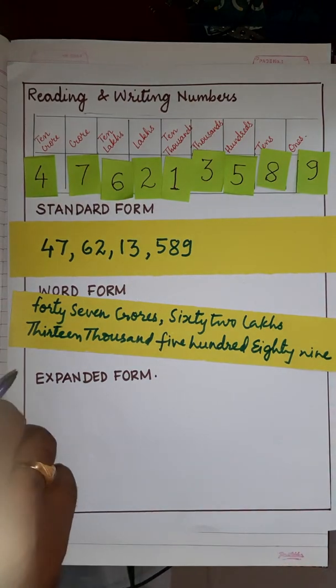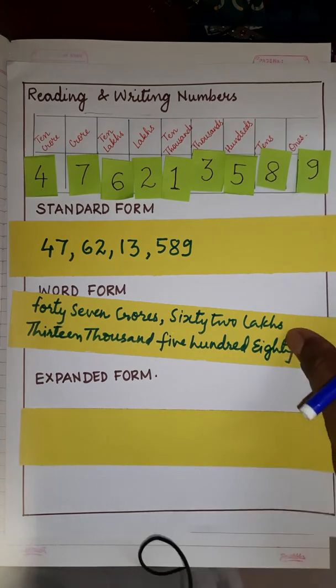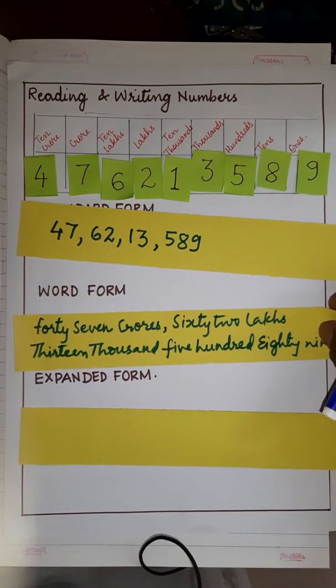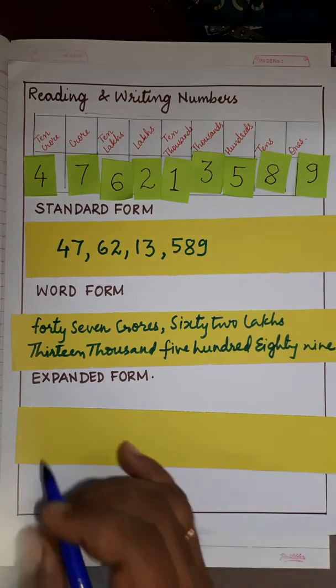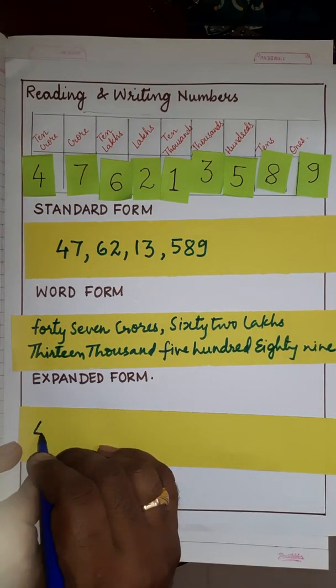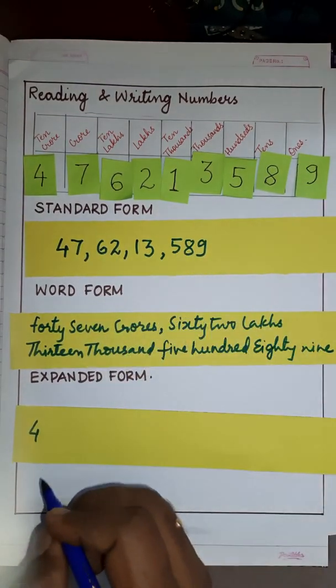Okay, and when we write the same thing in expanded form, how do we write it? Just see how do we write the expanded form. Now, I write 4 followed by 1, 2, 3, 4, 5, 6, 7, 8 zeros